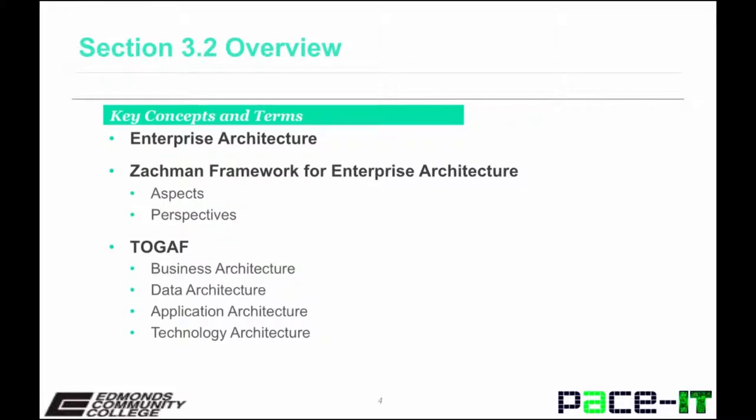The Zachman Framework for Enterprise Architecture is a matrix consisting of six columns and six rows. The columns represent the aspects describing the who, what, when, where, why, and how of an enterprise, whereas the rows represent different perspectives of the enterprise in relation to the aspects.